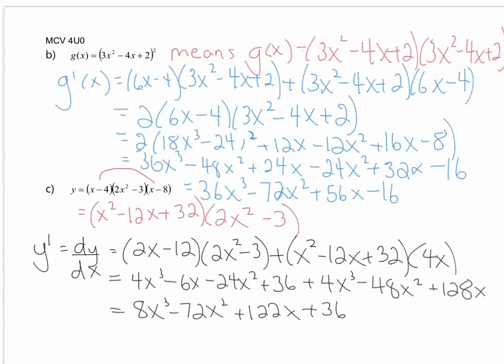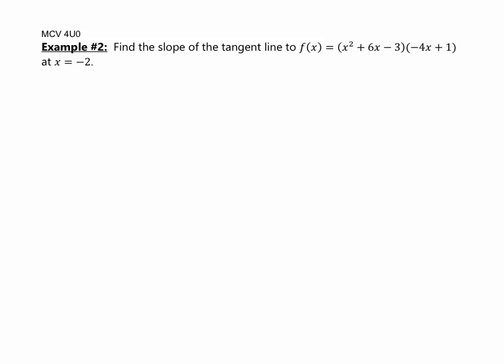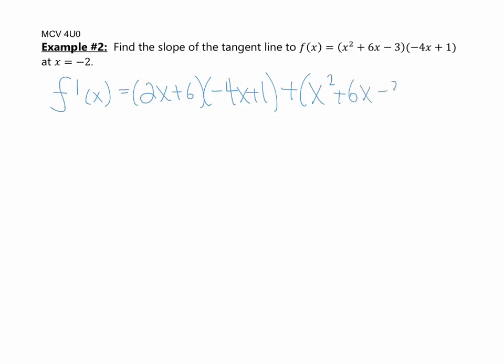Let's try one more — you've seen this type of question before, and now we've made it easier. We're going to find the slope of the tangent line to this function at x equals negative 2. Just like in the last unit we find the derivative, but now we don't have to use first principles anymore — we can use the product rule. The derivative: take the derivative of the first, which is 2x plus 6, times the second, negative 4x plus 1, plus leaving the first alone (x squared plus 6x minus 3) times the derivative of the second, which is just negative 4. We can expand and simplify, or go straight to evaluating at negative 2, being careful with order of operations.